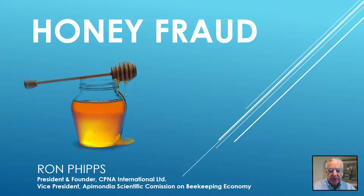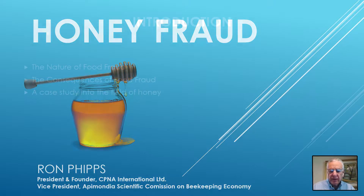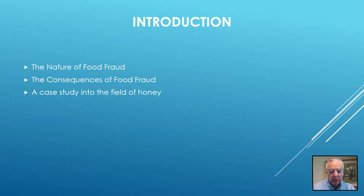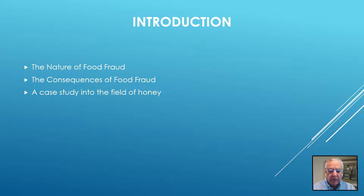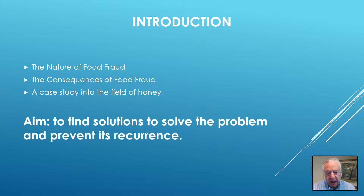The purpose of this presentation is to describe the generic nature of food fraud and its devastating consequences. The presentation will also cite a case study in the field of honey, which the U.S. Pharmacopoeia has classified as the third largest area of adulteration in the current era. Our aim is to find solutions to solve the problem and prevent its recurrence.